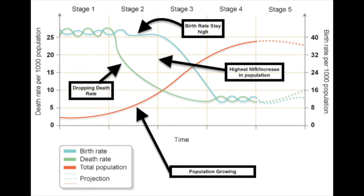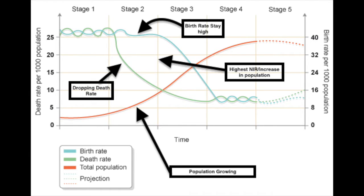Stage two of the demographic transition model is where we start to see death rates lower immensely. Birth rates stay the same, but death rates are starting to decrease. This is due to the Industrial Revolution — we start seeing increases in medicine and healthcare. Penicillin is being invented, and we know about pasteurization at this point. So as we go along in this stage, we see a huge increase in population because birth rates are staying the same while death rates are plummeting. We also start seeing people moving to cities because machines like tractors are taking jobs on the farmland.